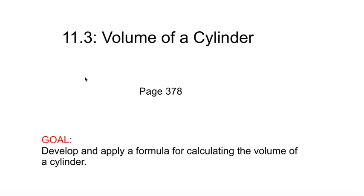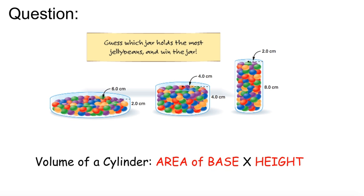This is a multi-step process, as was the surface area of a cylinder, so there's a lot here. You can go slow because you can pause everything — pause when you need to. The question is: guess which jar holds the most jelly beans and win the jar.